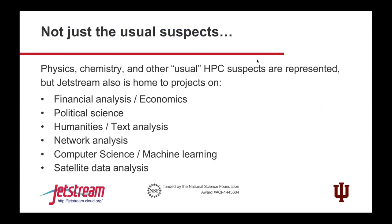As I like to say on Jetstream, we're not just the usual suspects. On big HPC systems, the high-energy physicists and molecular chemists have been using HPC for a long time and know how to fill up a system. But we have a lot of folks that are very different — financial analysis, economics, political science, humanities tech analysis. One of the coolest things is a student at IU using Google Maps and doing delta research for erosion and water control. As long as you fit our computing profile and don't need thousands of cores, Jetstream can offer a home for all sorts of different projects.